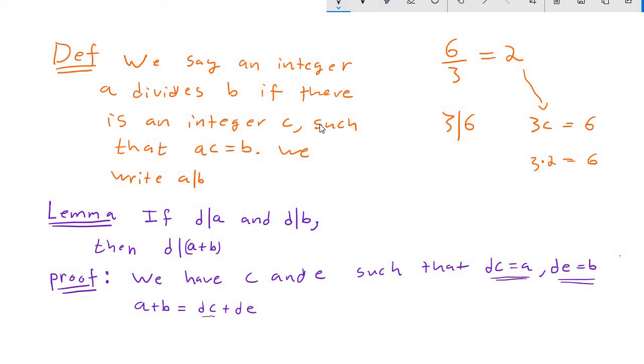But now look, I've got a common factor of d in both of these terms, so I can factor that out in front and I get d times c plus e. So a plus b is equal to d times c plus e. Remember we wanted to show that d divides a plus b. Our definition said that meant we had to find some number so that d times some number was equal to a plus b. But that's what we just did—we just found a number so that when we multiply that number by d, we get a plus b. So we've completed our proof that d actually does divide a plus b.